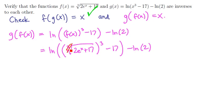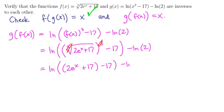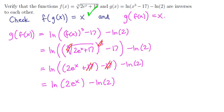You have a cube root cubed, and so those two expressions cancel, and we're left with the natural logarithm of the quantity 2e to the x plus 17. Then we take away 17 from that, and then we take away ln of 2 from the whole thing. But the plus 17 and the minus 17 cancel, and so we have the natural logarithm of twice e to the x minus the natural logarithm of 2. This expression is a product, so I can break it apart using the rules of logs as ln of 2 plus ln of e to the x.